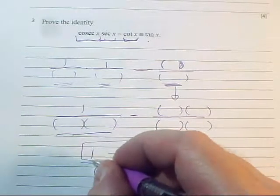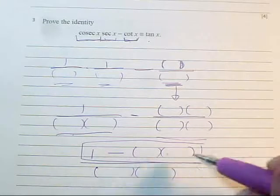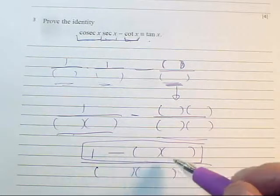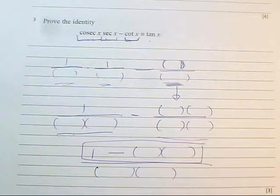And then you've got to hope that something helpful happens here. Ideally, you hope that there's going to be a squared trig function in here. So you're going to be able to use one of your standard identities.